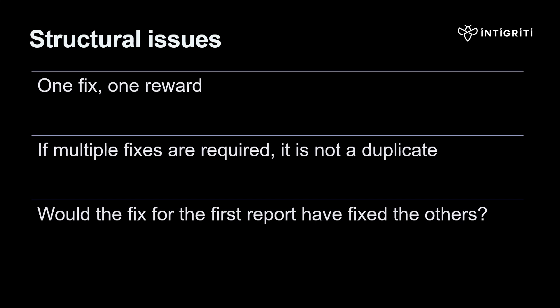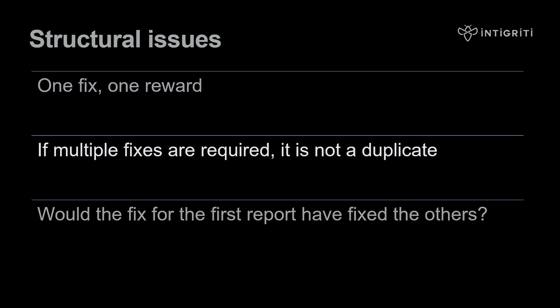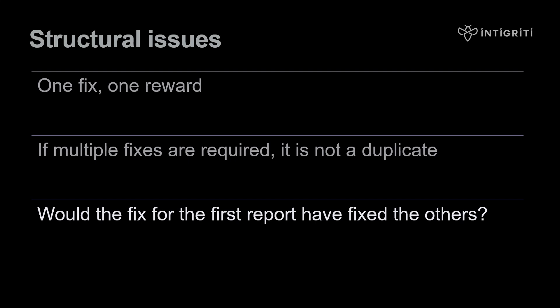Another important topic is structural issues. There is a one fix, one reward policy — submissions can be marked as duplicates if they share the same underlying root cause in the code. If two different endpoints each require their own fix, that wouldn't be a duplicate, since fixing the first wouldn't prevent the second vulnerability from being found. However, if a single code change fixes the vulnerability on both endpoints, they would be marked as duplicates. When in doubt, ask yourself whether the fix for the first report would have also fixed the other.